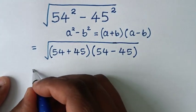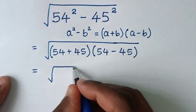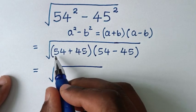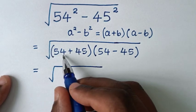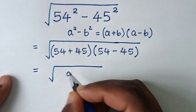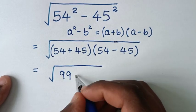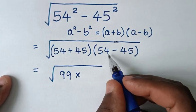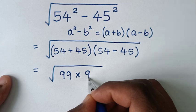Then in the next step it will be equal to square root of 54 plus 45, 4 plus 5 it is 9, 5 plus 4 it is 9, 99. Then times 54 minus 45, it is 9.